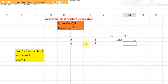What we want is to find the values of x and y so that both functions f1 and f2 equal zero. How to do that?